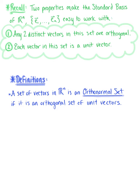So this means that every vector in the set, or each distinct pair of vectors in this set is orthogonal, and all of the vectors have length one.